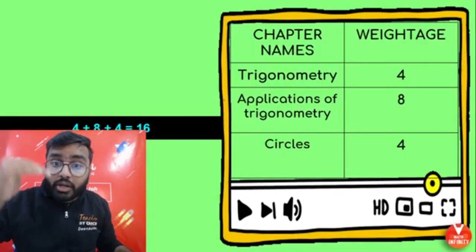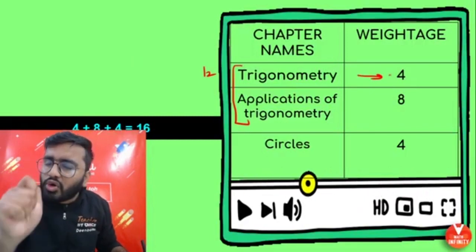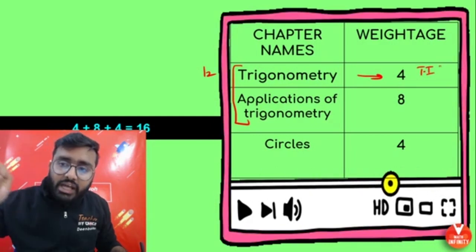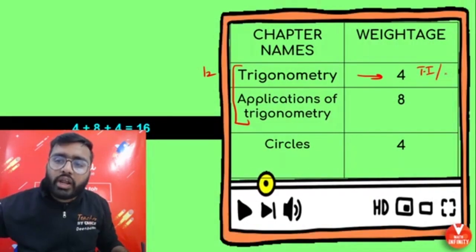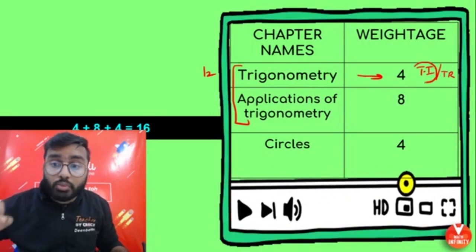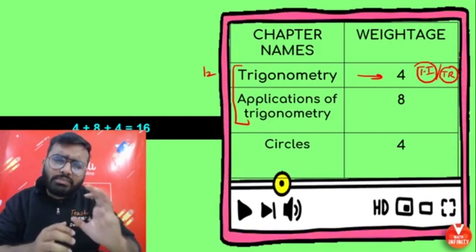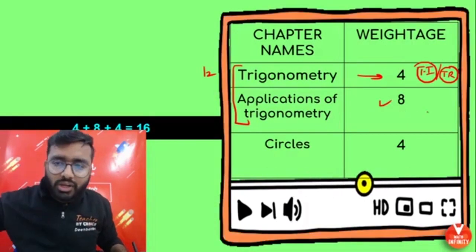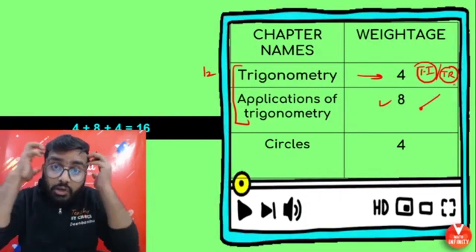Trigonometry carries a total of 12 marks. Most probably, trigonometric identities could give a 4-mark question, or one 2-mark and one 3-mark question from identities. A simple question from trigonometric ratios can also appear. Trigonometric identities have very high chances. Also prepare trigonometric ratios of special angles. For Applications of Trigonometry — that cloud/height-and-distance type problem — keep those concepts sharp.